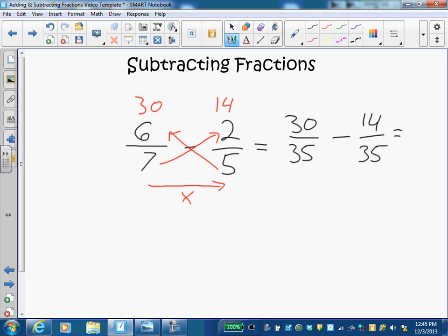These fractions are now the same kind of fraction or I like to say the same color and they're broken into equal amounts and so now we can subtract them from each other. I have thirty of these thirty fifths and I'm going to take away from them fourteen of these thirty fifths and when I do the subtraction thirty take away fourteen is sixteen and I'm left with sixteen of those thirty fifths.